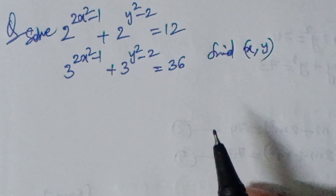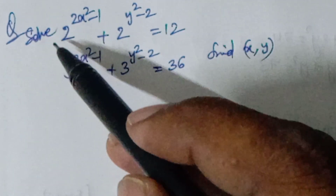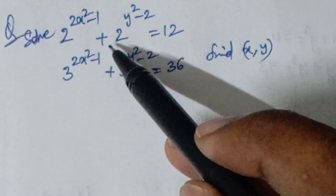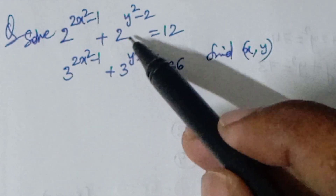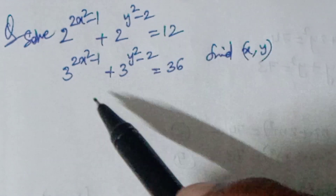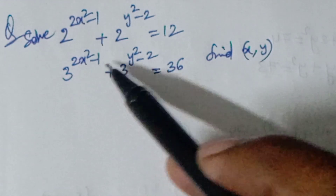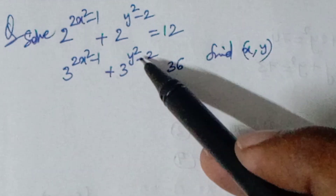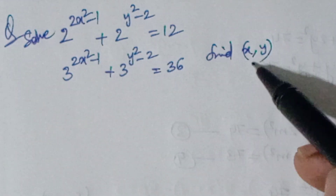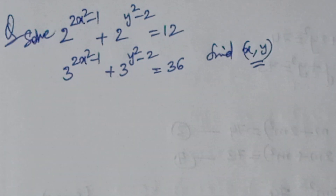Welcome to I On CG Max. The question is: given 2 to the power of (2x² - 1) plus 2 to the power of (y² - 2) equals 12, and 3 to the power of (2x² - 1) plus 3 to the power of (y² - 2) equals 36, find all possible values of x and y.